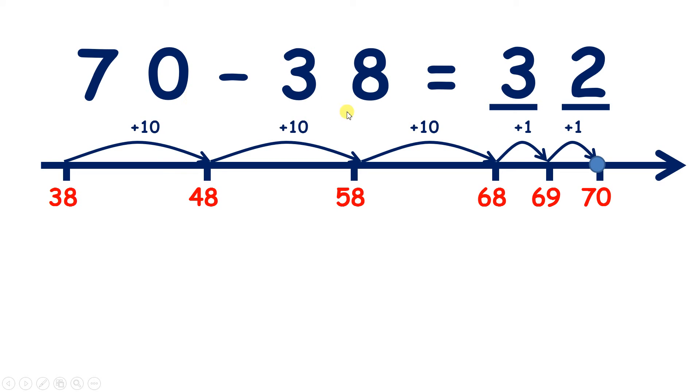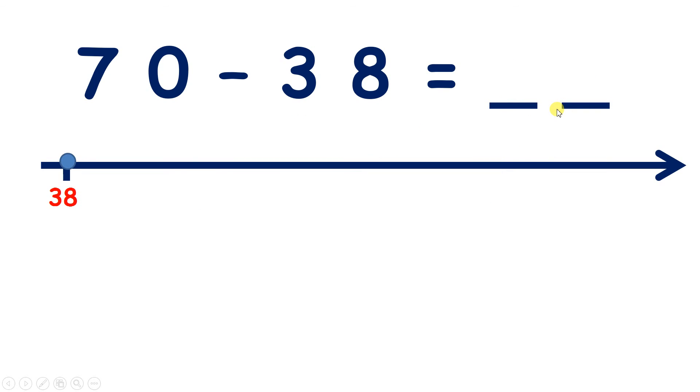Or in fewer steps you might be able to jump all the way to 68, so adding 30, and then jump to 70, so adding two.